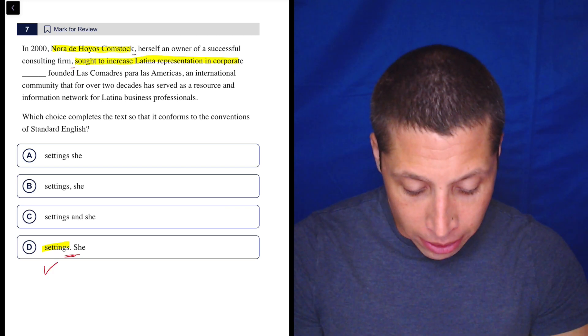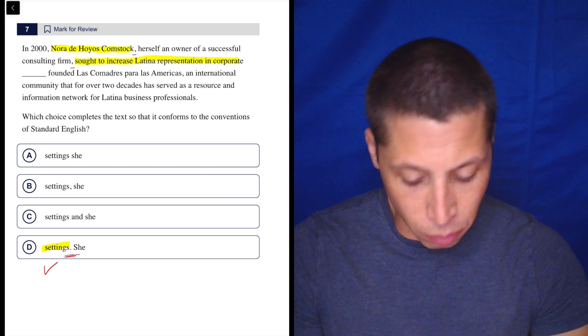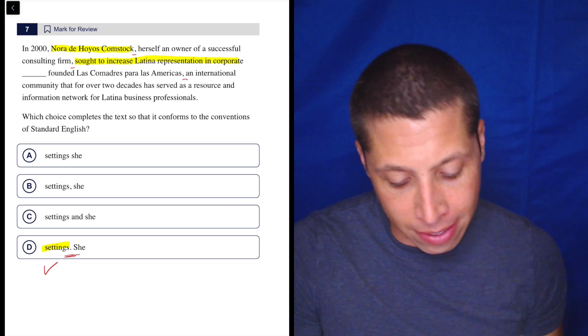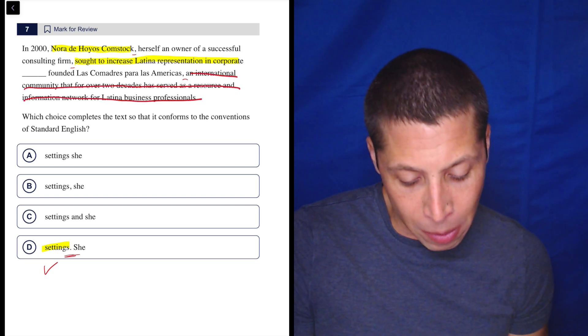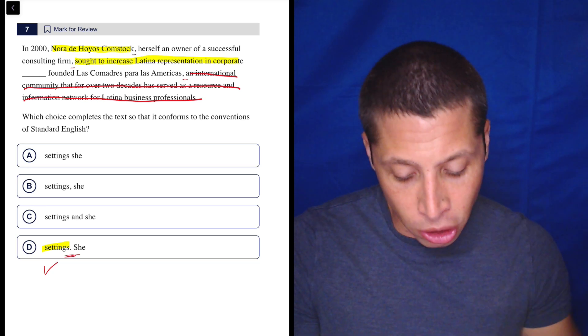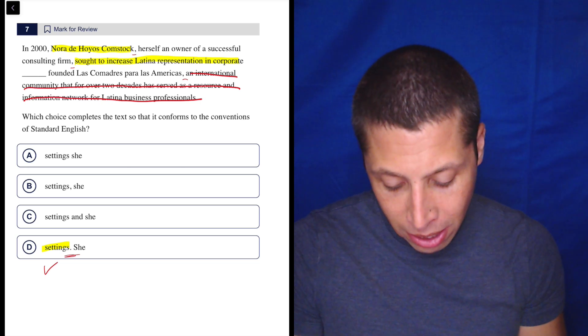She founded Las Comandres para Las Americas, an international community that for over two decades has served as a resource and information network for Latino business professionals. Well, here again, we have a comma. This time, it's adding this entire thing to the end. And so it's great, useful information, but not useful in terms of finding a sentence. The actual sentence is, she founded Las Comandres. That's it. So we have two sentences.